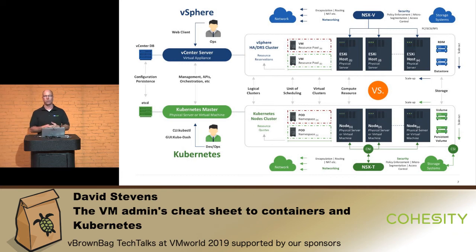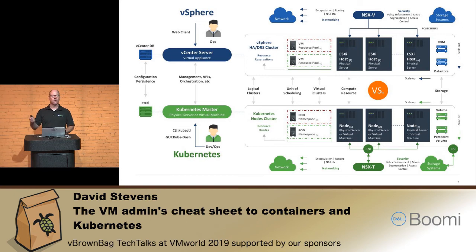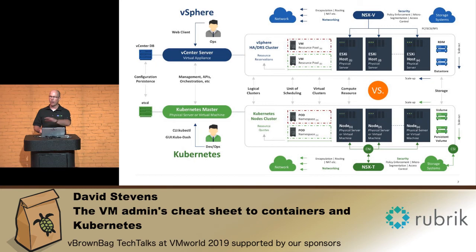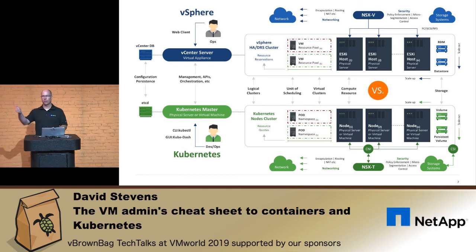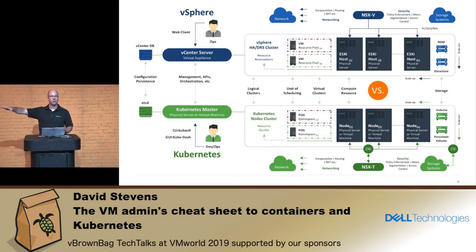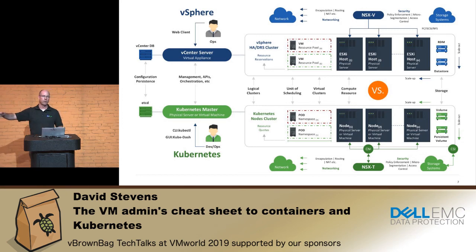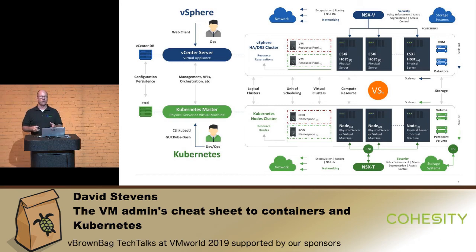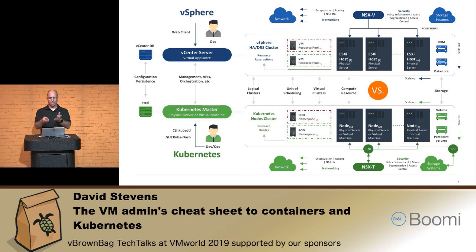Pods are broken up into namespaces — it's how you take a group of containers and group them together to bring up an individual application. Going back to the Windows IIS example: in a container world, you'd have an individual web server container. If those web servers get over capacity, you can easily spin up more web server containers, independent of your application. Then your application runs across all those web servers at scale. That's really where containers have a big difference. Nodes are equivalent to ESXi hosts, and storage behind containers is still a bit of a mishmash.